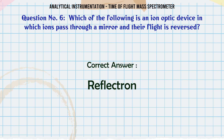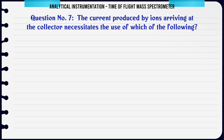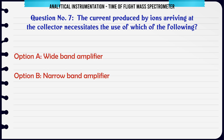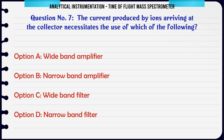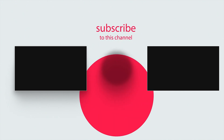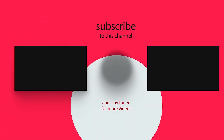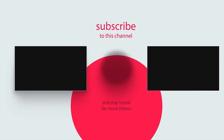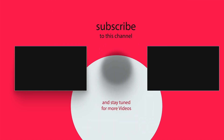The current produced by ions arriving at the collector necessitates the use of which of the following? A: Wideband amplifier. B: Narrowband amplifier. C: Wideband filter. D: Narrowband filter. The correct answer is A: Wideband amplifier.